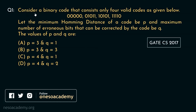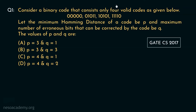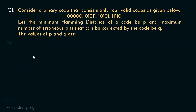Observe the first question. Consider a binary code that consists only four valid codes as given below. Now let the minimum Hamming distance of a code be P. For all these codes, the minimum Hamming distance is going to be denoted as P. And the maximum number of erroneous bits that can be corrected by the code be Q. Now our job is to find out the values of P and Q. These are some options given, with different values of P's and Q's already provided. So let's try to solve it.